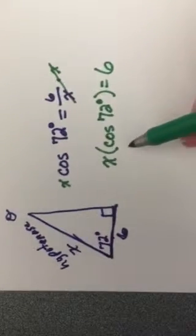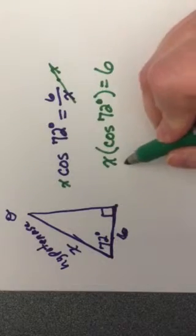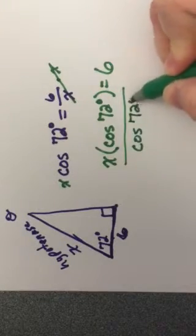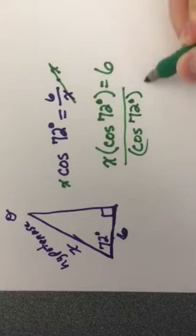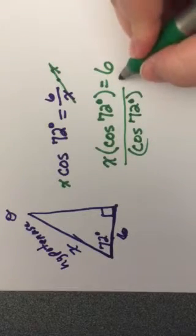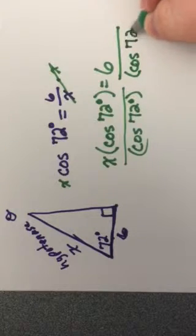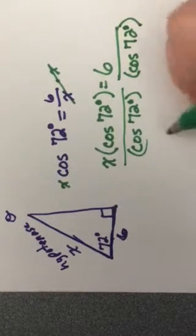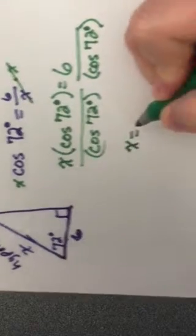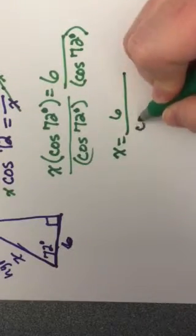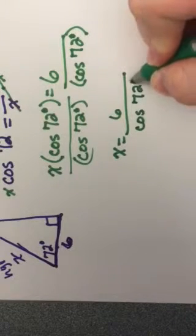Right now I have x times the cosine of 72 degrees equals 6. So again, I want to get x by itself. I'm going to divide by the cosine of 72 degrees. This is one value, so it stays together. And what you do to one side, you got to do to the other. So now I have x equals 6 divided by the cosine of 72 degrees.